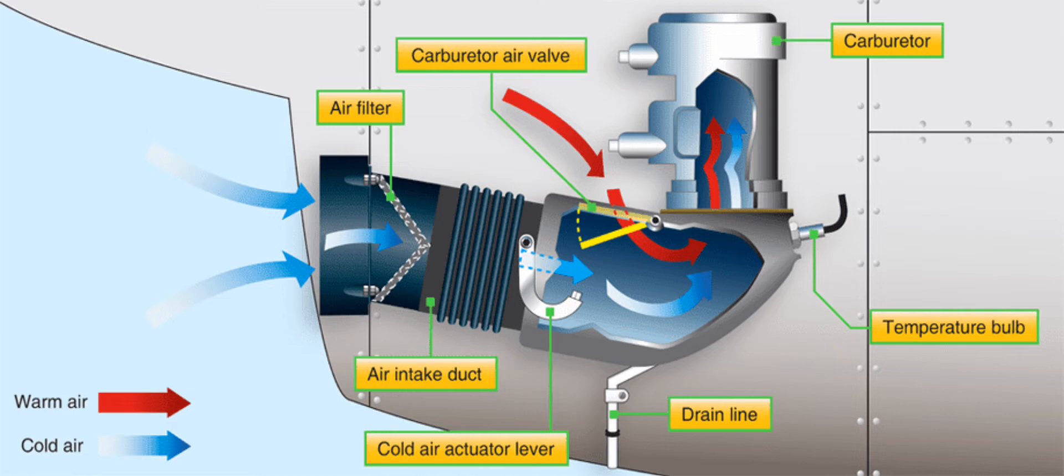What are the three major parts of a reciprocating engine induction system? Air scoop, fuel delivery system, and intake manifold.